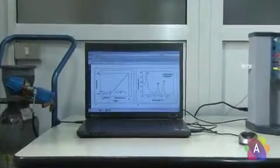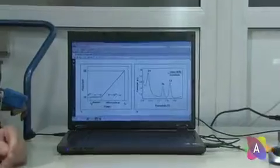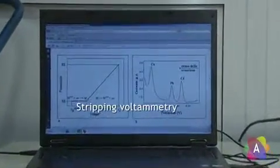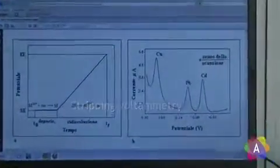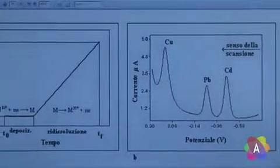In addition to the previous direct scanning techniques, the AMEL 4330 allows you to perform the stripping voltammetry. In a first step, a pre-concentration potential is applied to the working electrode.